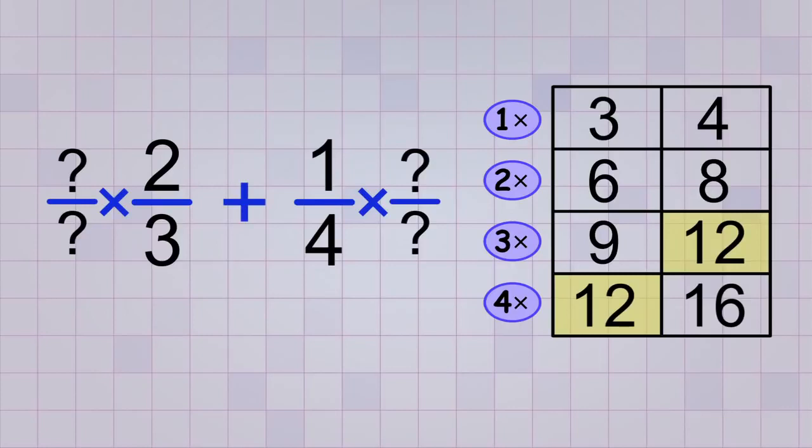For example, if you multiplied by 4 to get the common multiple for the first unlike fraction, then you'll use 4 over 4 as your whole fraction. And if you multiplied by 3 to get the common multiple for the second unlike fraction, then you'll use 3 over 3 as your whole fraction for it. Have I lost you yet? It should make a lot more sense after you've seen a few examples.